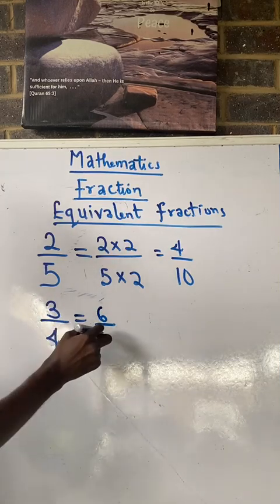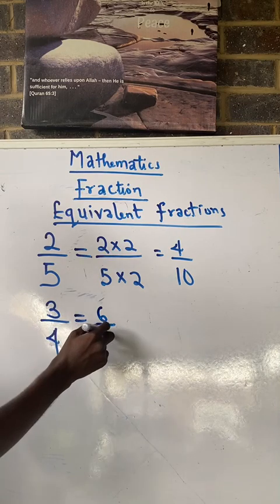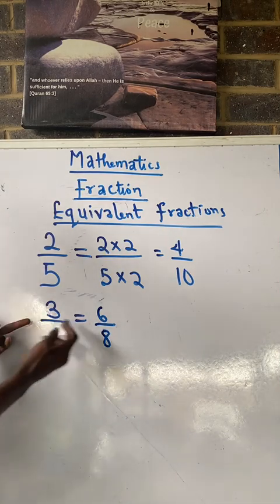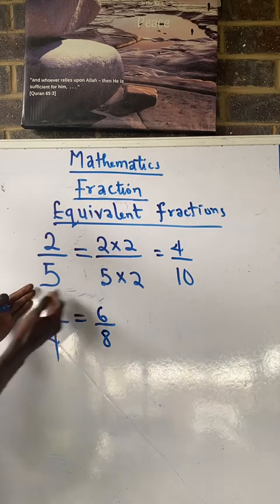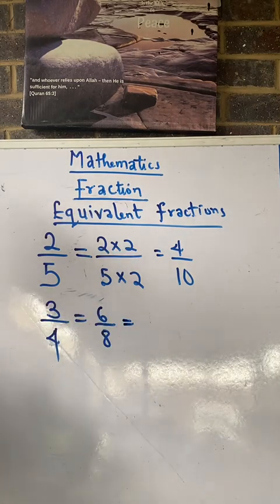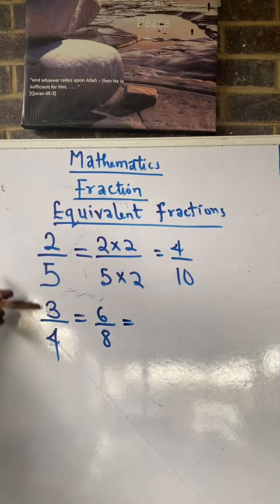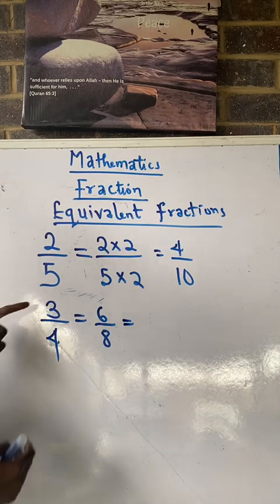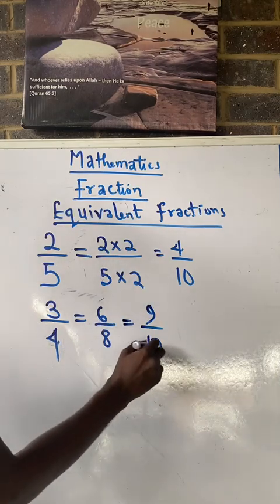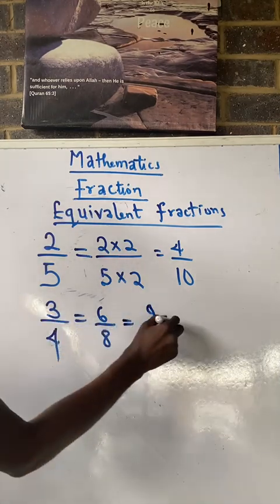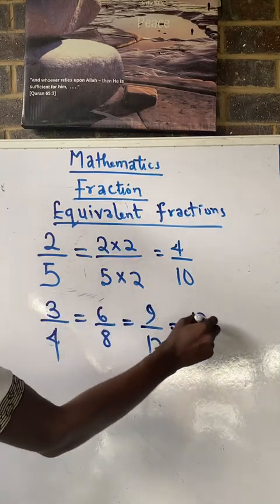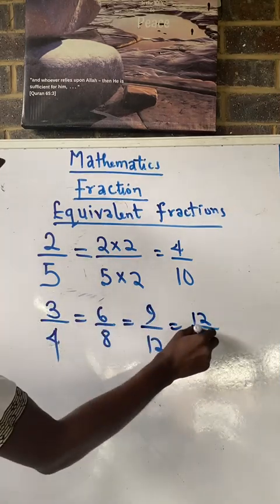Four times two gives me eight, so six over eight is equivalent to three over four. Then multiply both by three: three times three gives me nine, four times three gives me twelve — still equivalent. Multiply both by four: four times three gives me twelve, four times four gives me sixteen — still equivalent.